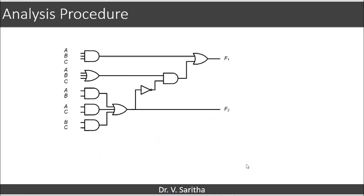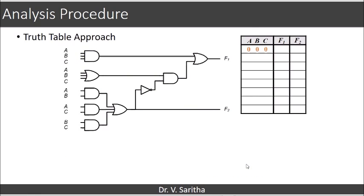The same we can do using truth table approach. When we are doing with the truth table approach, we are going to get the outputs F1, F2 in terms of 1s and 0s.